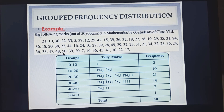Similarly, if we take the number 50 — in the group 40 to 50, 50 is the upper class limit, so we are not going to write 50 in that group. We are going to include 50 in the group of 50 to 60. Students, when you are going to form this group frequency distribution table, this is something you have to keep in mind.